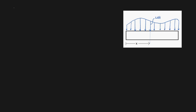G'day guys, in this particular video I'll be tying three crucial concepts together through two really useful formulas. Those two formulas are: dm/dx is equal to v of x, and dv/dx is equal to minus w of x. Now m stands for the internal bending moment at a point x, v stands for the internal shear force at a point x, and w stands for your distributed load at a point x.